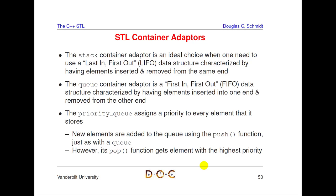A student asked how priority is managed internally in a priority queue. It's managed by a heap — a partially-ordered, almost-complete binary tree. Let me pull up Wikipedia to show you. This is a binary max-heap where the item of highest priority is at the root. 'Almost complete' means any missing items only occur on the last level, and the parent is always higher priority than its children.